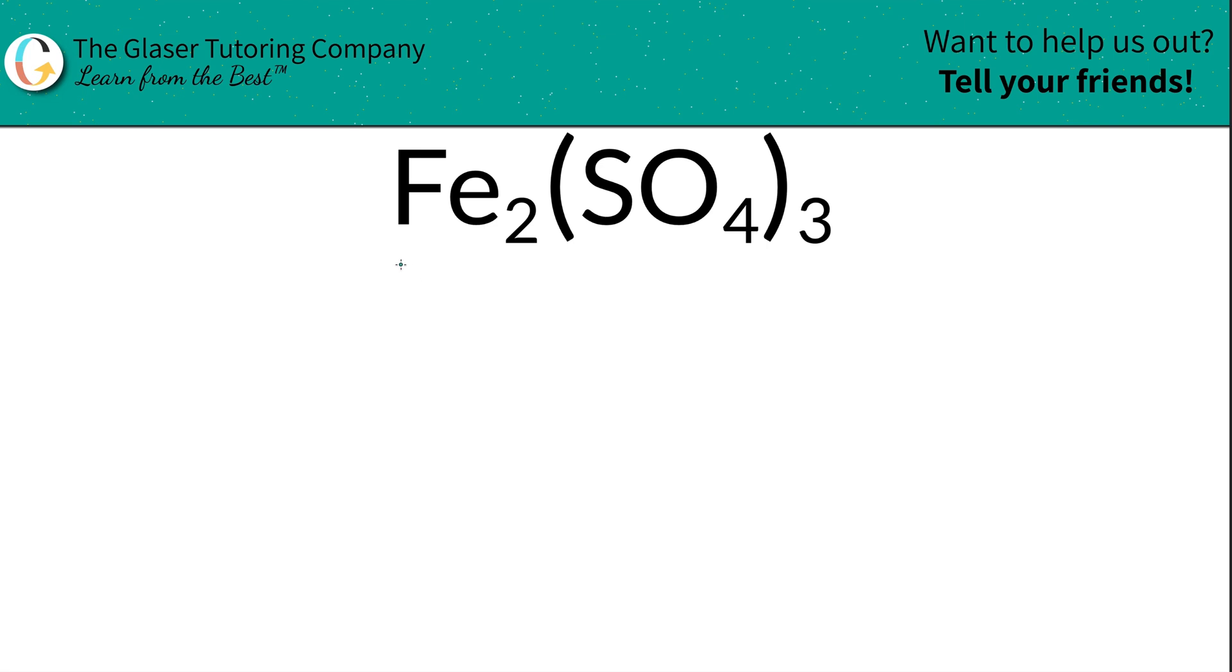How do you calculate the percent composition of iron, sulfur, and oxygen in iron(III) sulfate? The first thing is we need to find the total mass. I've created a table to help us out with that, and then we can easily find those percents from there.